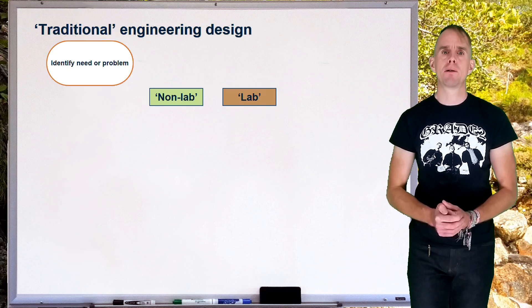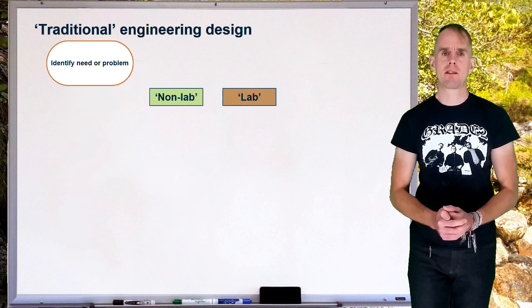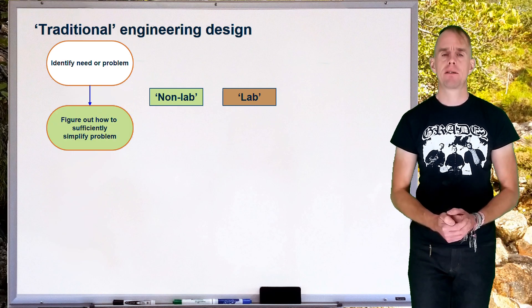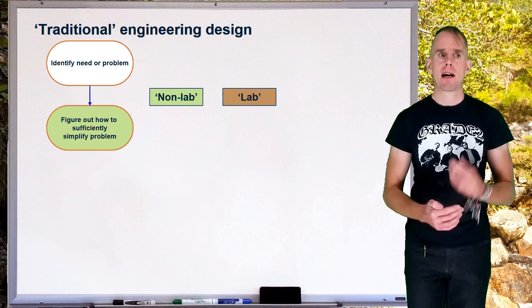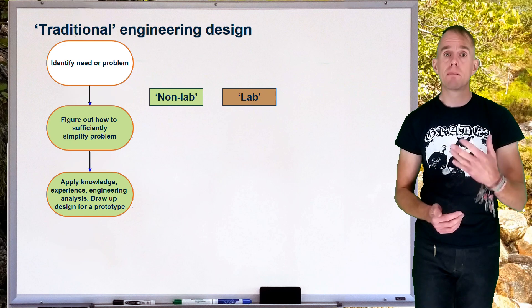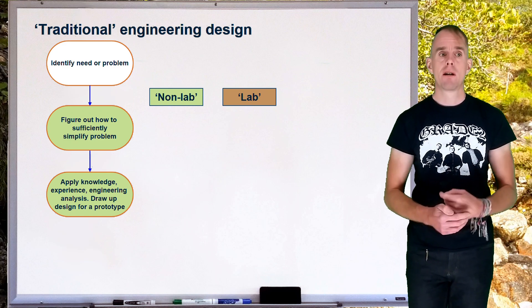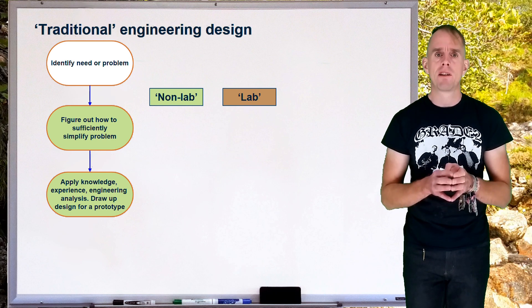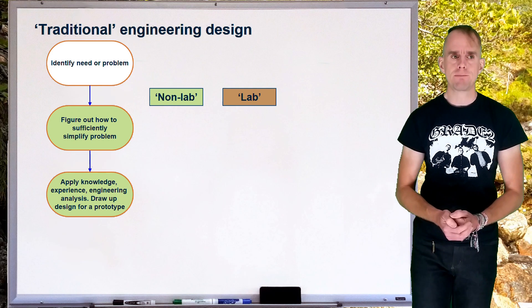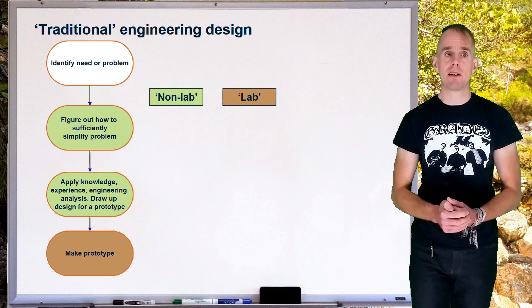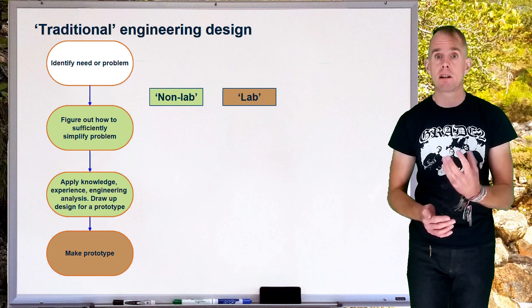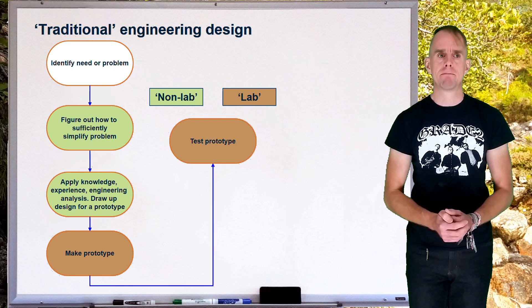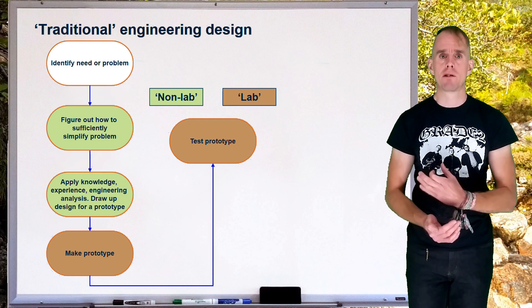So, on the board in front of you, I'm going to put a flow chart of what I'm going to call traditional engineering design. And engineering design typically starts with the identification of a need or a problem. Once that need or problem has been identified, engineers then get together, usually in a team, to figure out how to efficiently simplify the problem, such that you can apply your engineering knowledge to solve it. And that engineering knowledge might be some kind of analysis. It might be hand calculations. It might be approximate methods. It might be quite in-depth calculations. But the end goal of this engineering analysis is to draw up a design for a prototype of some sort. So, once that prototype has been designed, it needs to be manufactured, which is in itself not a trivial task. Never underestimate the complexity involved in prototype manufacture. And then it has to be tested for whatever its function is going to be. Again, this is not a trivial step and can be a very time-consuming, very skillful process.